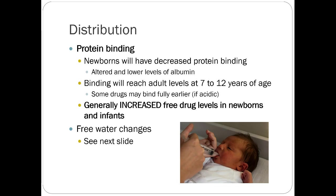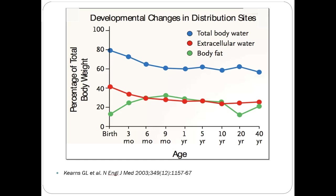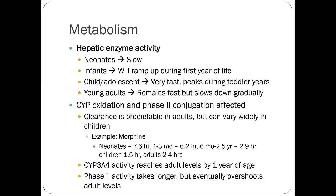Free water changes — there are differences in percentage of total body weight with water versus extracellular water and body fat that change as people get older. It steadies out fairly early; once they approach a year, it's not that much different from an adult. But in those early kids — especially if you go into neonatal medicine — you'll really see a lot of kinetic differences. In more general pediatrics, it's not quite as pronounced.